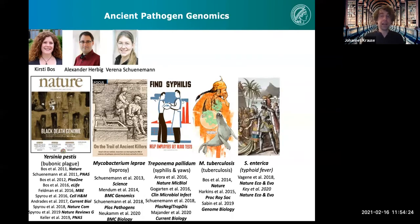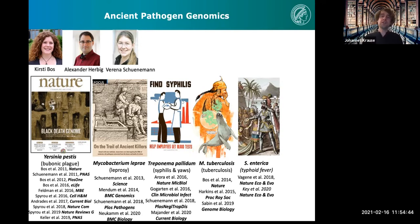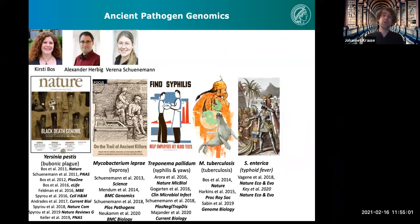We also looked at Salmonella enterica, which causes typhoid fever. We traced it back to hunter-gatherers in Eastern Europe — some of the oldest bacterial genomes we have reconstructed — and got the whole history of how it becomes a human pathogen. We could also reconstruct major outbreaks from the New World: in the 16th century there was an introduction to Mesoamerica, and we think we have good evidence that Salmonella enterica was responsible for the Cocoliztli pandemic that happened first in 1545 in Mexico, with second and third outbreaks in the 1570s and 1580s.